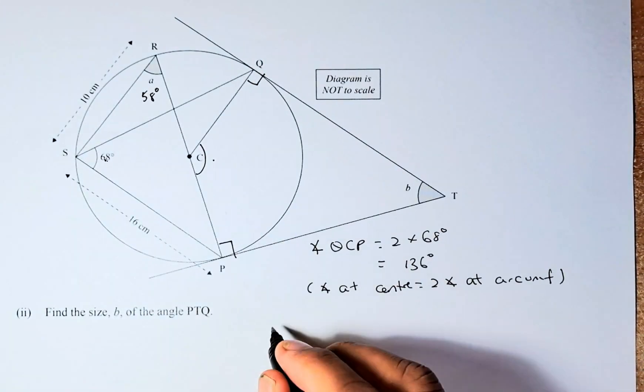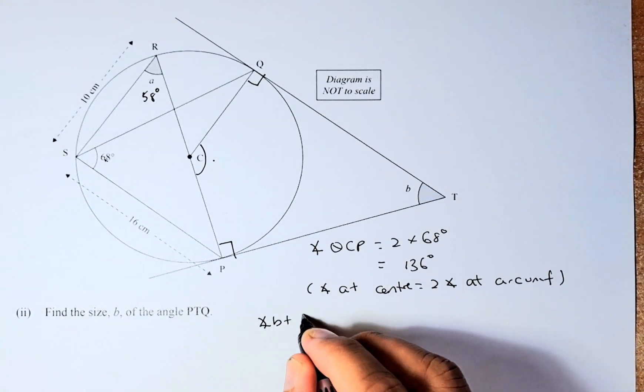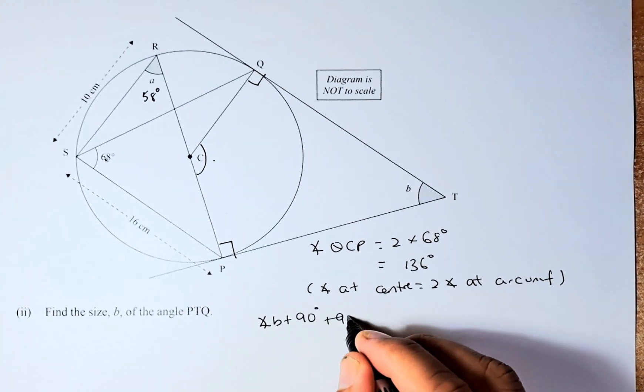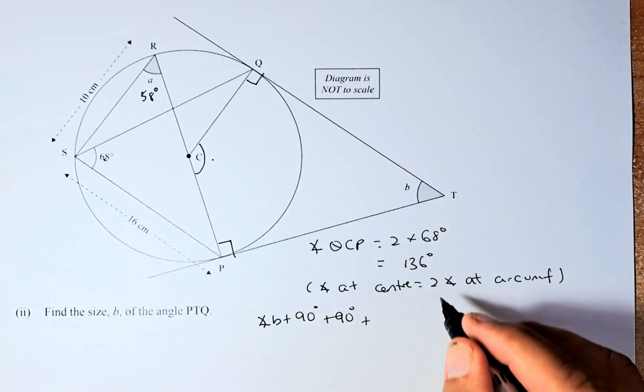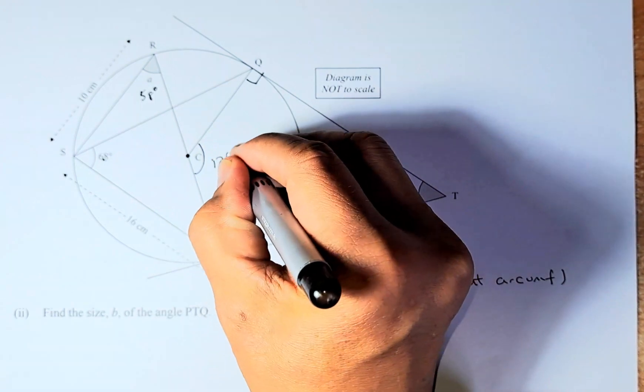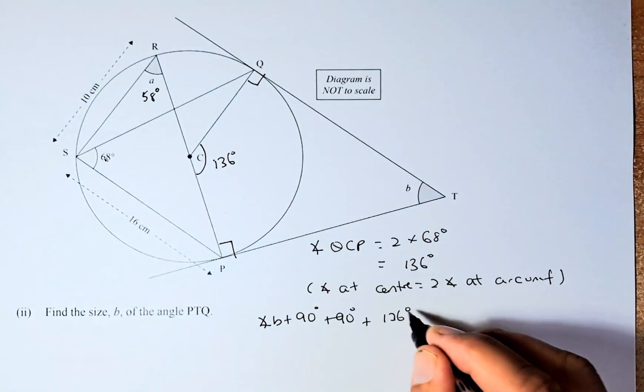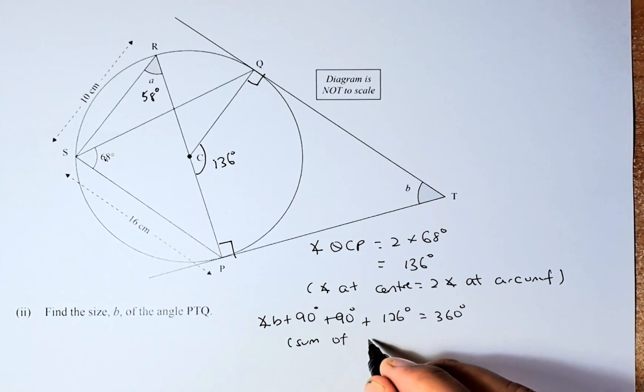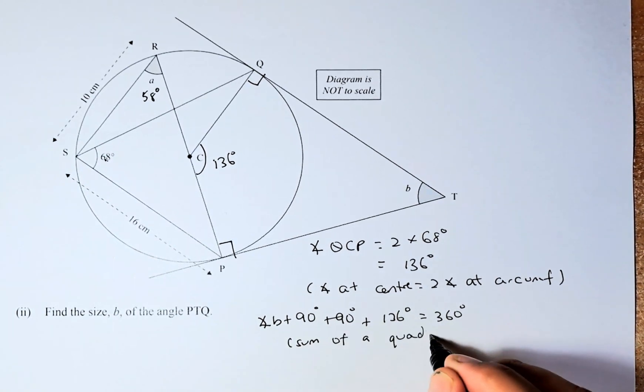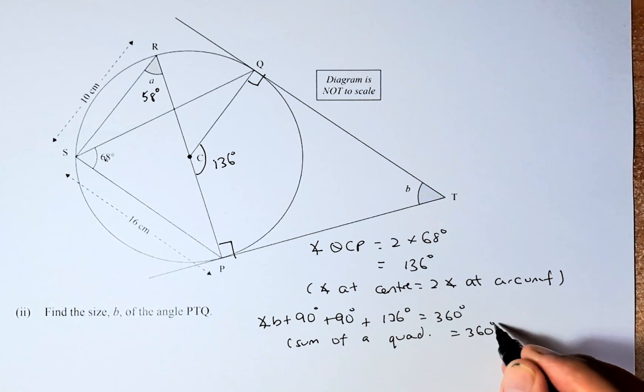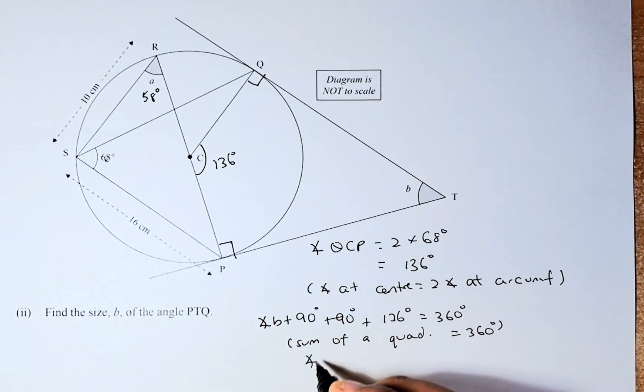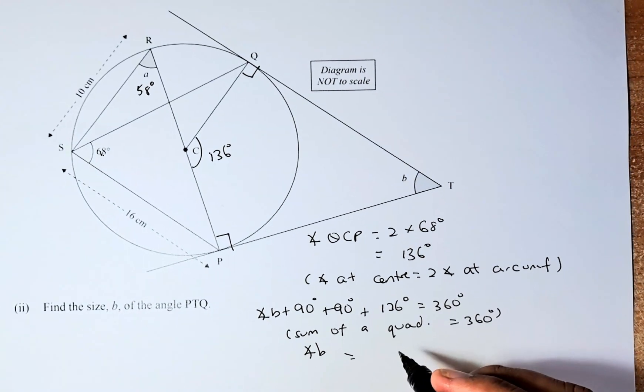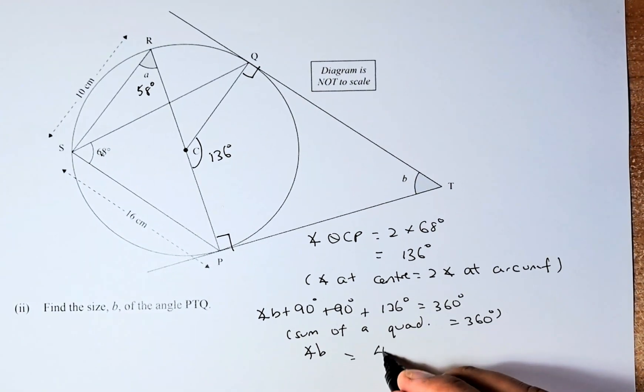To calculate angle B, angle B plus 90 plus 90 plus 136 - we found this at 136 degrees - they must add up to 360, because the sum of a quadrilateral equals 360. So simple now, angle B is just going to be 360 minus the rest of the angles, and the answer will come up to 44 degrees.